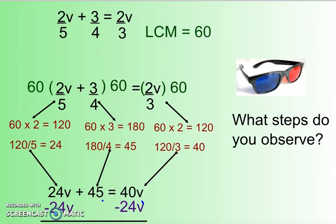What I want you to do is first look at this problem. Okay, so looking at this problem, here's the original problem up here. What do you notice? How do they get from here and what are they doing here? Okay, and then how do they get down to 24v plus 45 equals 40v? What's going on?